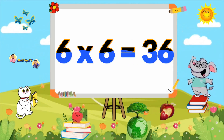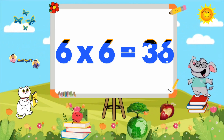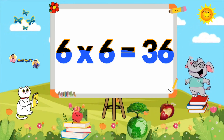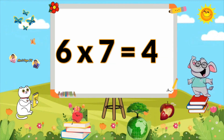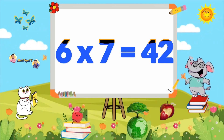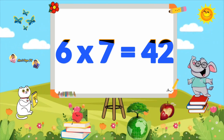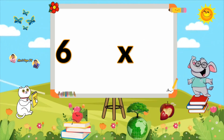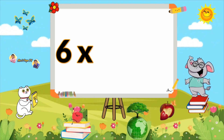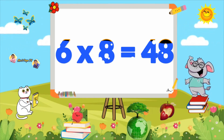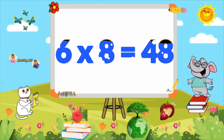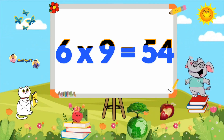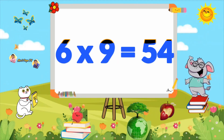Six sixes are thirty-six. Six sevens are forty-two. Six eights are forty-eight.